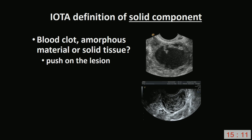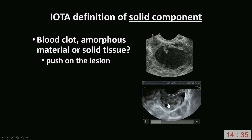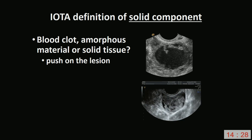Sometimes it's difficult to know if a structure is solid tissue or some amorphous material, and there are different tricks you can use. You can push upon the mass — sometimes the suspicious structures lift, move away from the wall, and start to swim freely in the cyst fluid, telling you it's not solid tissue. Sometimes when you push upon a lesion, you can see the suspicious structure moves in a jelly-like fashion. Solid tissue doesn't move like that, so you know it's a blood clot or possibly a lump of mucus.